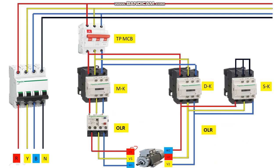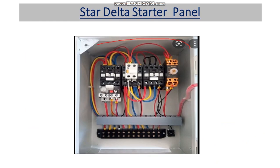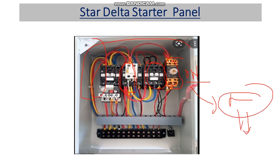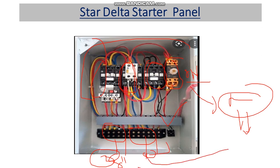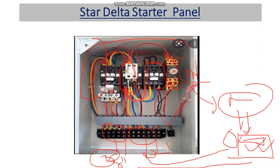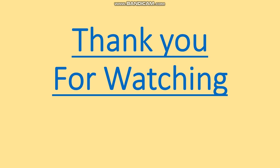That's how we do the power wiring of a star delta starter. This is the internal view of the star delta panel showing the main contactor, delta contactor, star contactor, and on-delay timer. Two-pair cables go from the main contactor side and the delta/star side to the motor terminals. We'll discuss the control wiring in the next video. Thank you for watching — please like, share, comment, subscribe, and hit the bell icon.